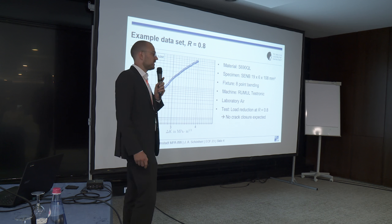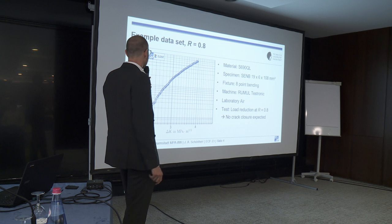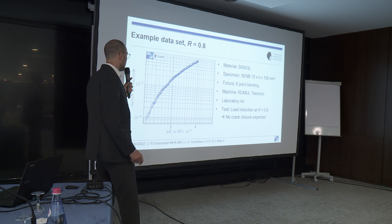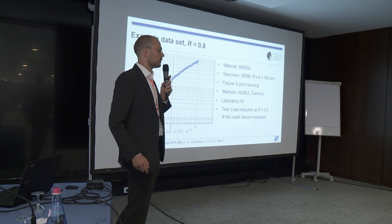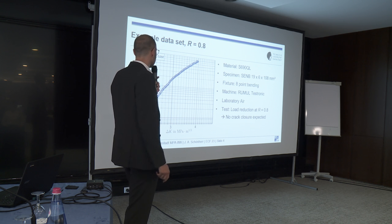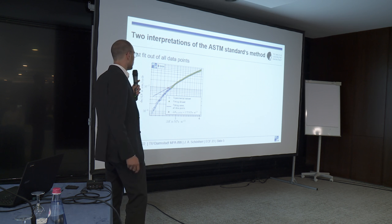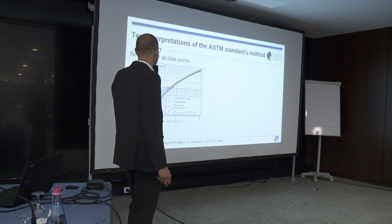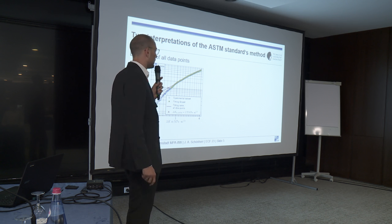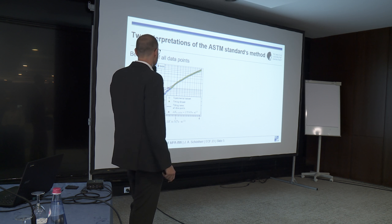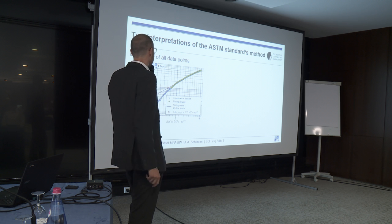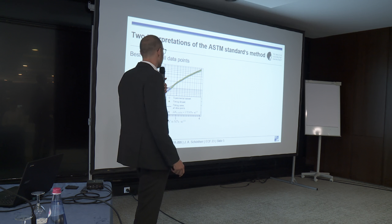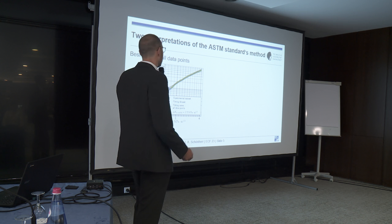At this high load ratio we do not expect crack closure or other intrinsic effects. If we obtain the fatigue crack growth threshold simply by meter reading at 10⁻⁷ mm/cycle per the ASTM operational definition, we get ΔK_TH of about 2.8 MPa√m. For ISO at 10⁻⁸ mm/cycle, we get about 2.3 MPa√m. Applying the ASTM standard suggestions straightforwardly — using all data points from 10⁻⁷ to 10⁻⁶ mm/cycle with a simple linear fit — we get an intersection at about 2.72 MPa√m, inducing an artificial conservatism due to the evaluation method.